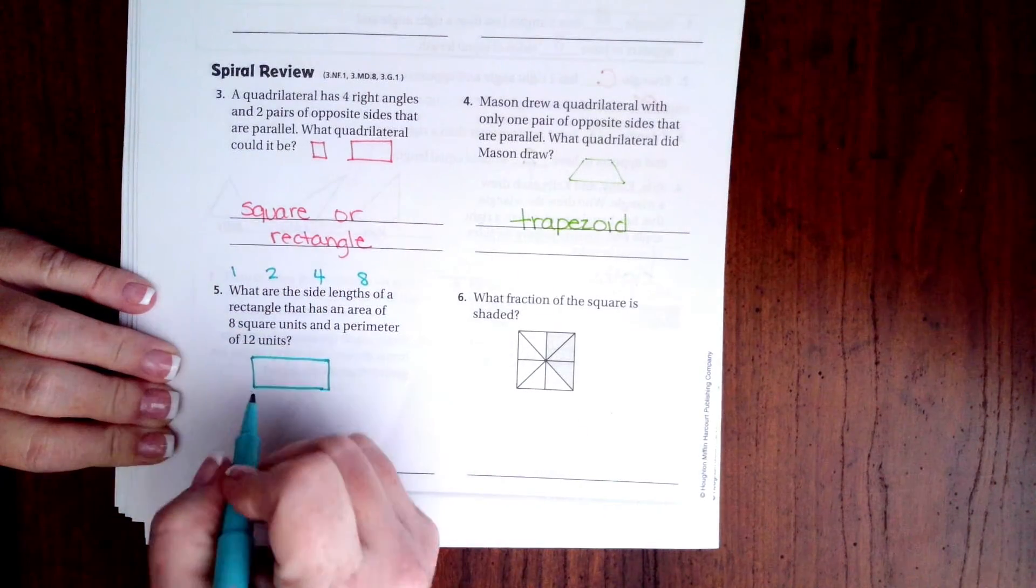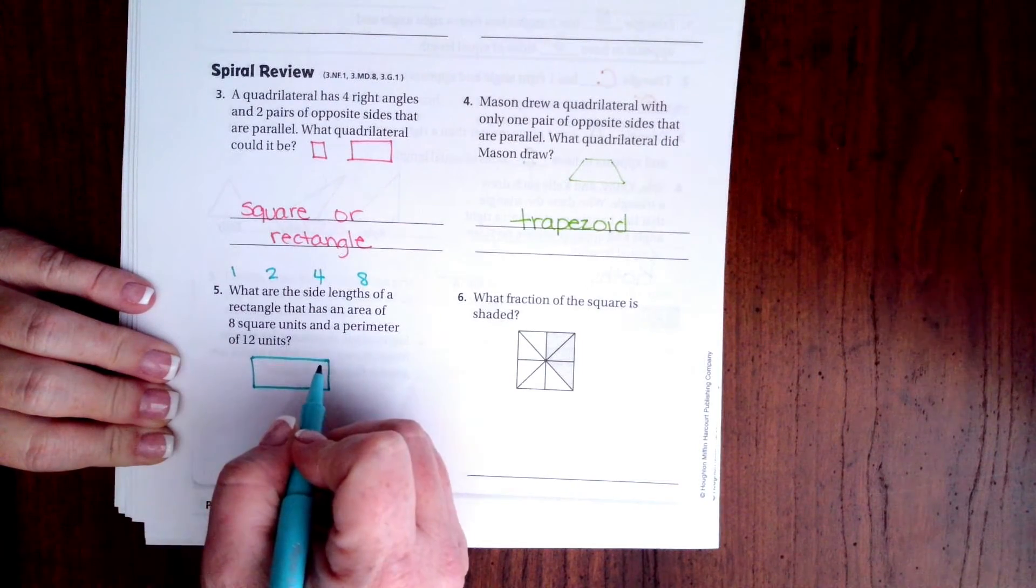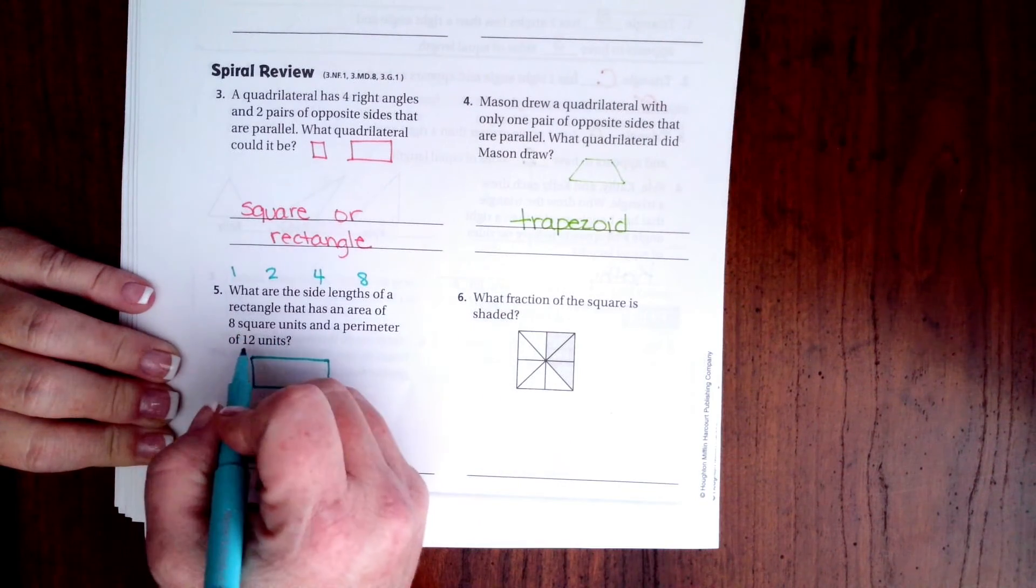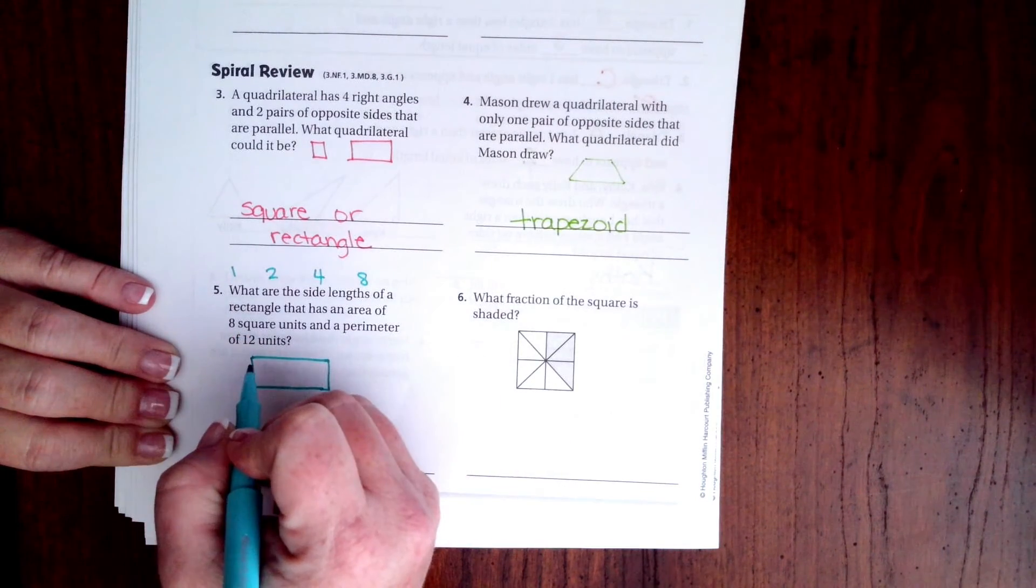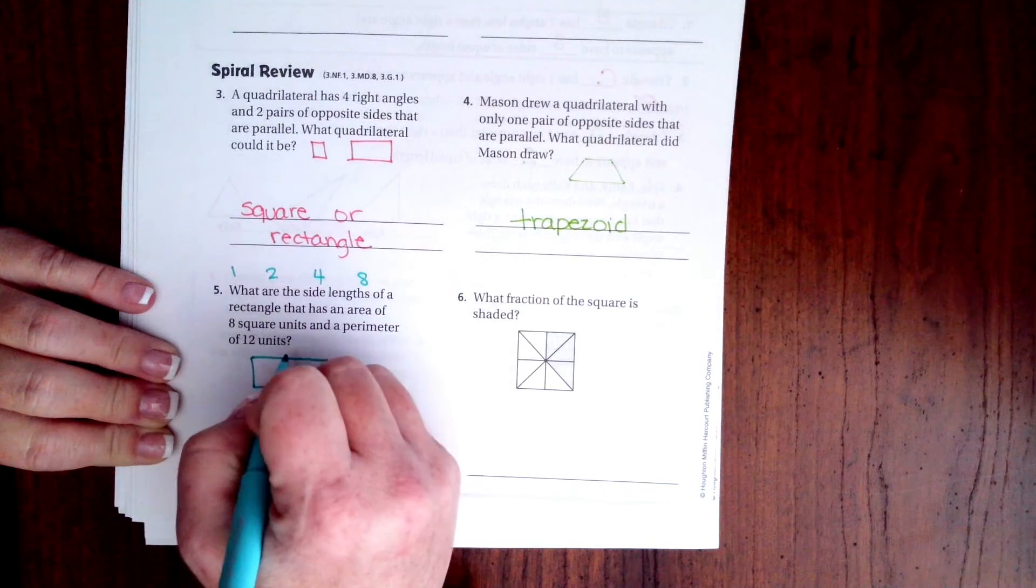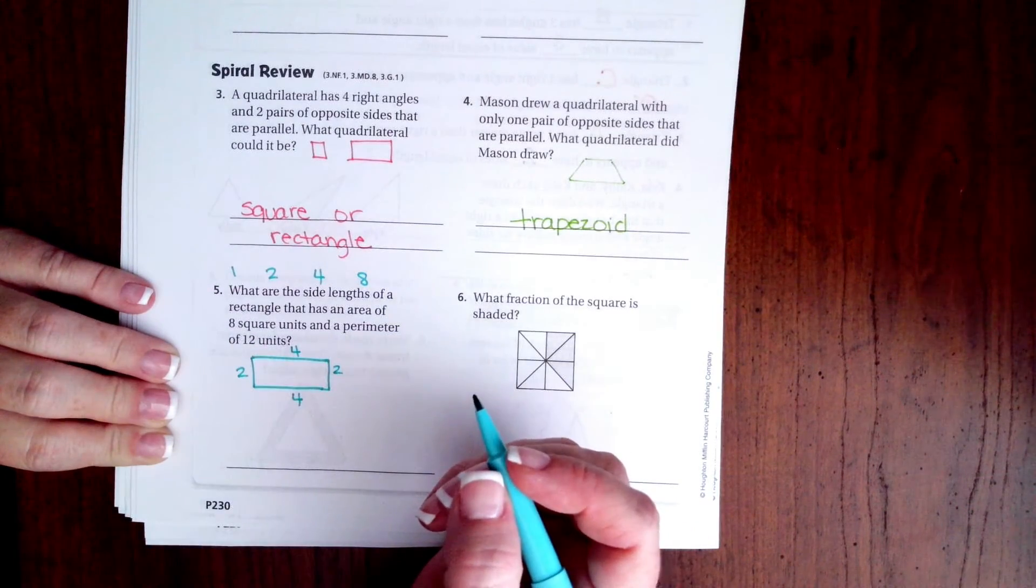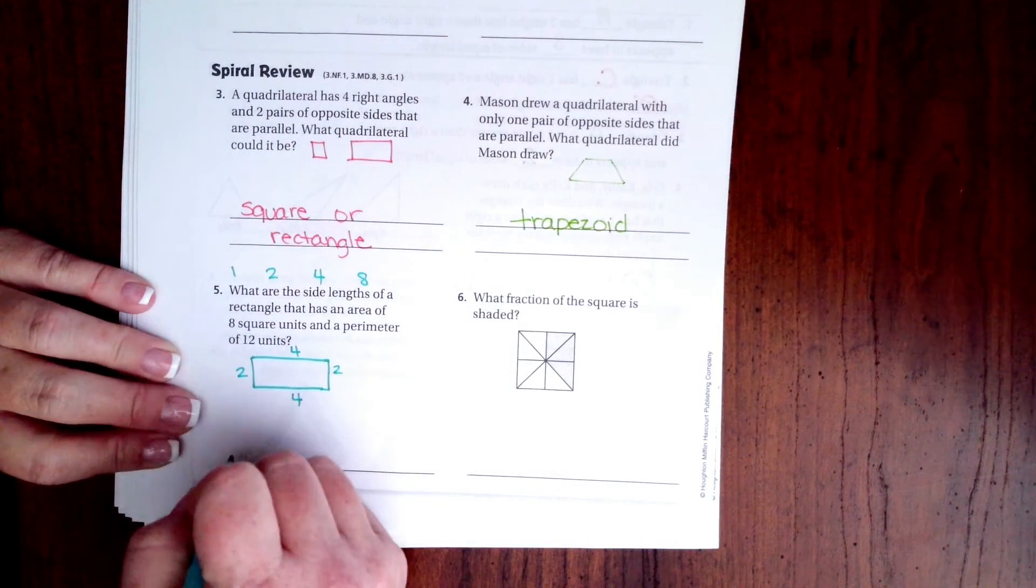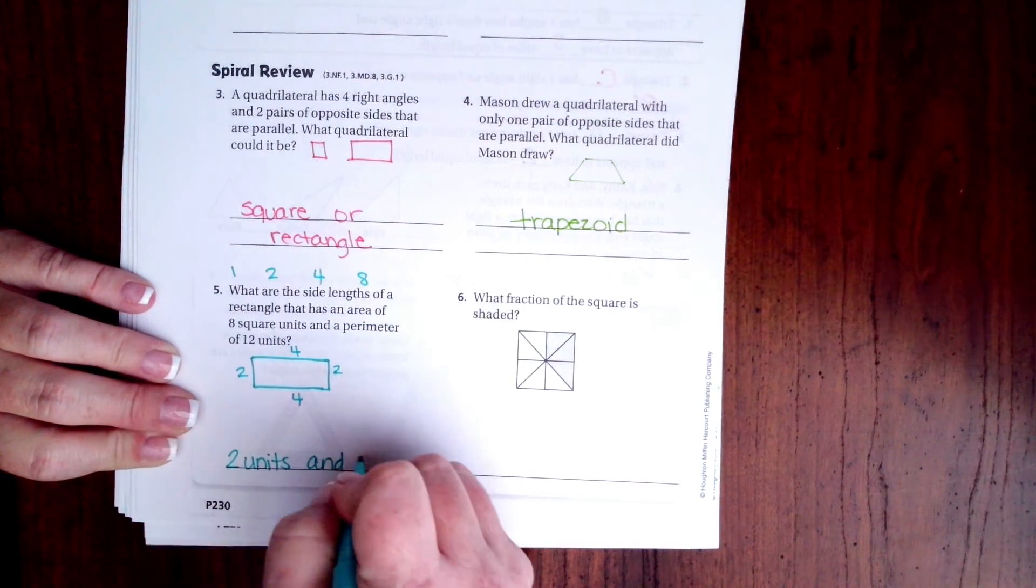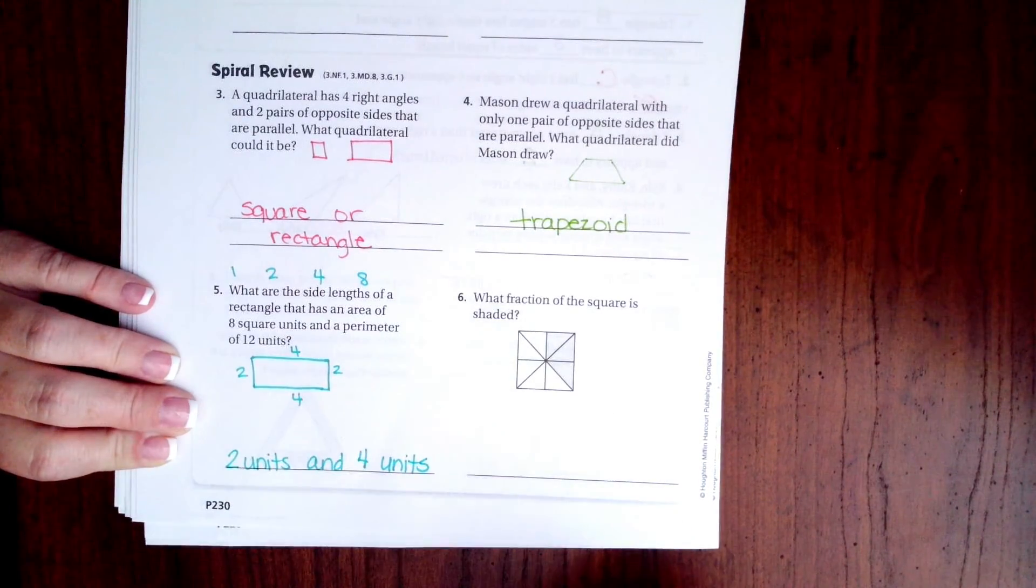So this could be one high and eight long, or it could be two high and four long. But it has to have a perimeter of twelve. The only way to get that is to do two, four, two, four. So we're gonna write two units and four units.